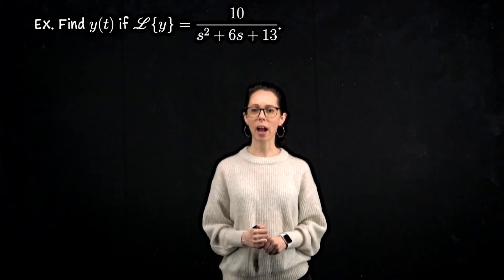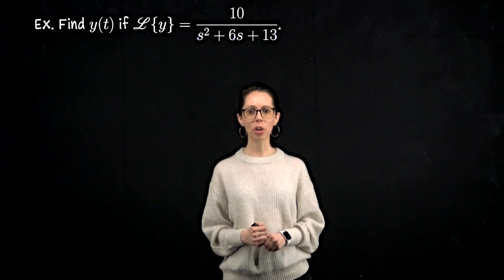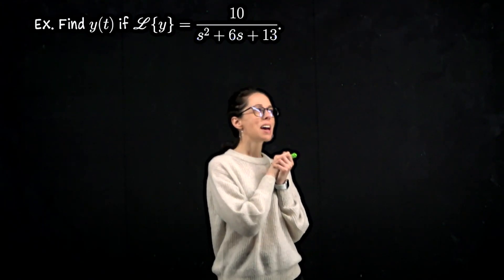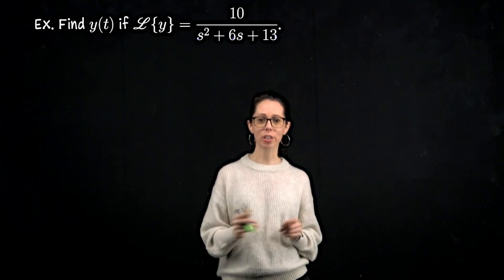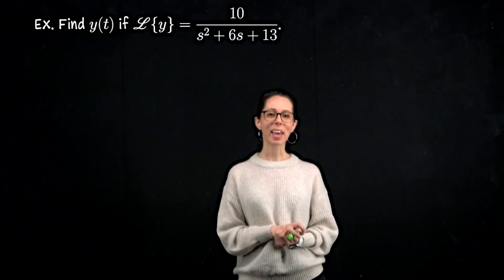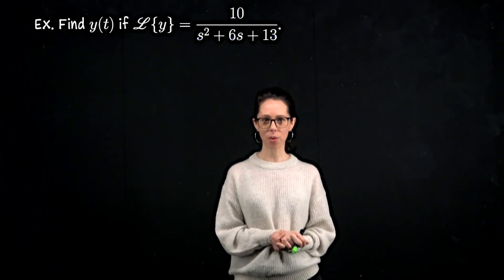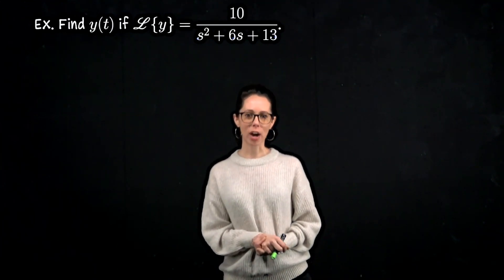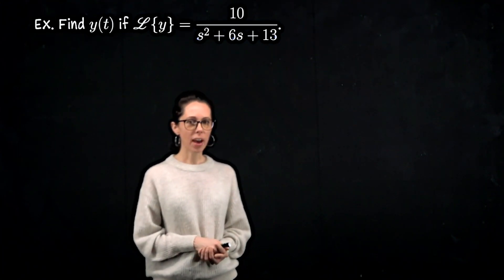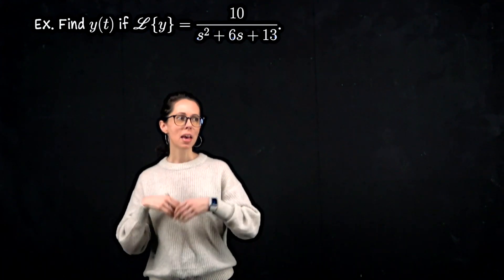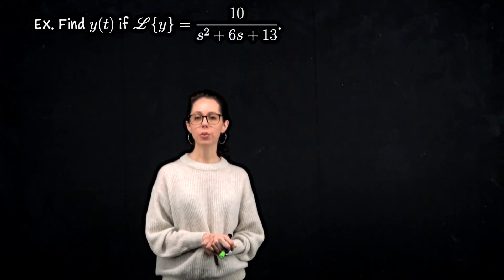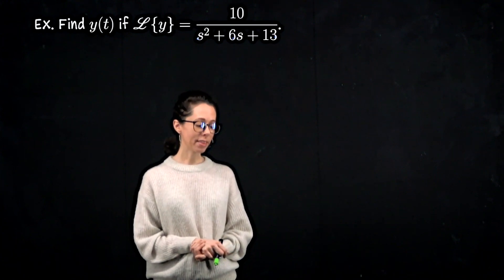In this example, we want to figure out the function y whose Laplace transform looks like 10 divided by s squared plus 6s plus 13. The context could be: we're solving a differential equation, took the Laplace transform of both sides, brought in initial conditions, isolated the Laplace transform of y, and now this is what we're looking at. We have a quadratic in the denominator. The first thing to try is to factor it — but this denominator cannot be factored.